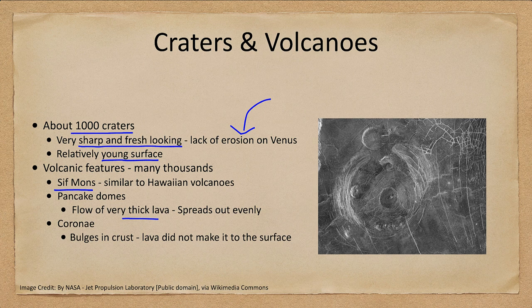We also have coronae, which are bulges in the crust where there are stress marks, and those bulges are where lava tried to push out but could not make it to the surface. So many of the features we see on Venus — beyond the few craters — are volcanic features.